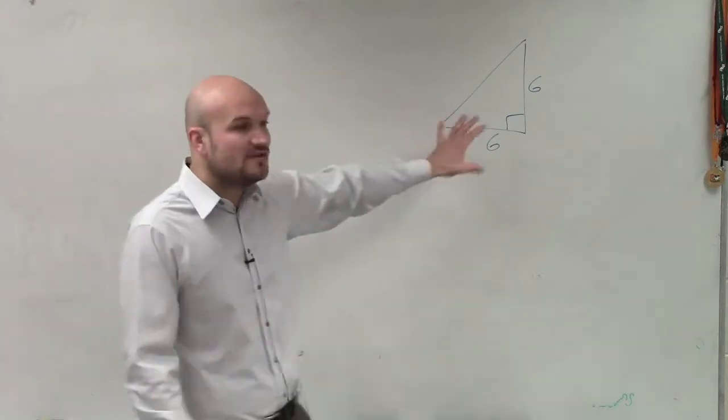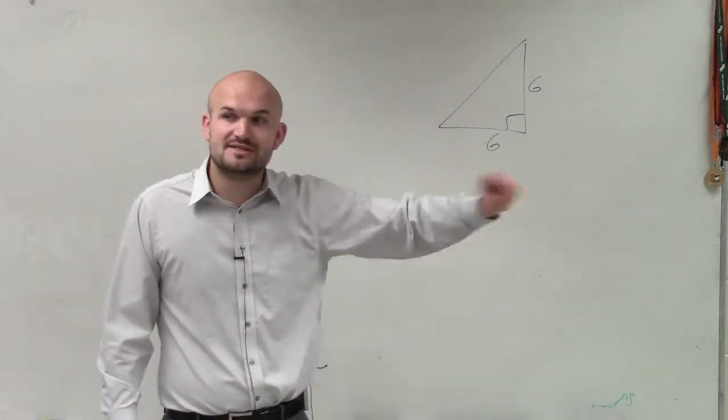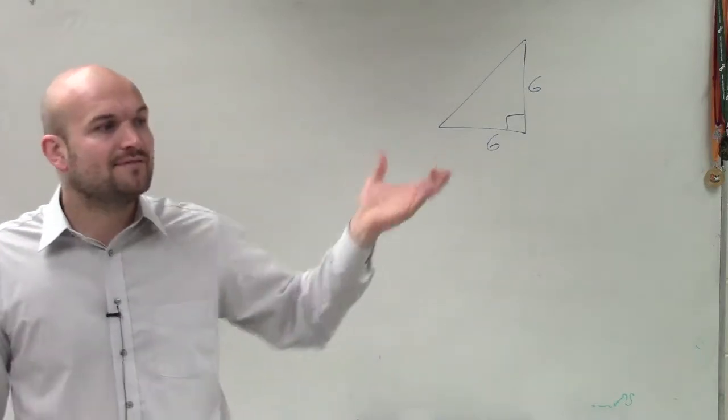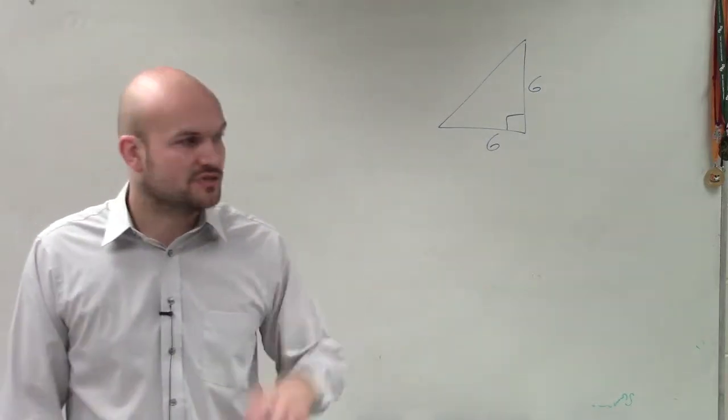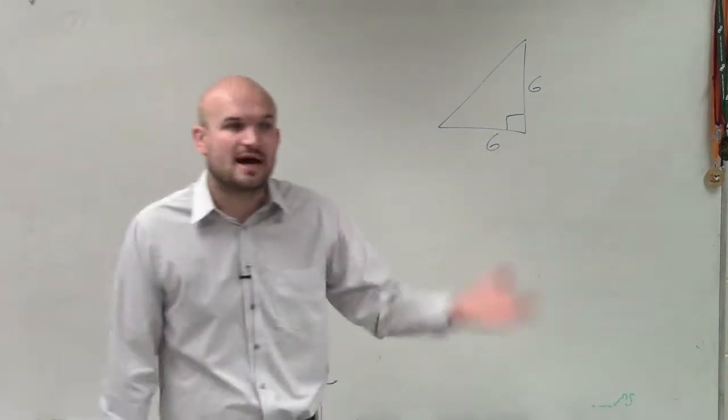So we know we can still evaluate for sine, cosine, and tangent. But instead of using the coordinate points on the unit circle, we're going to have to use the relationships of the sides of the triangle: opposite, adjacent, hypotenuse.